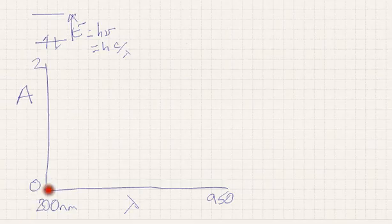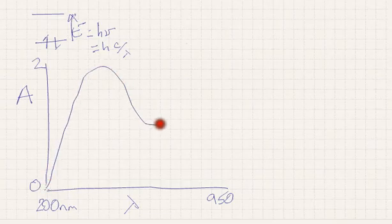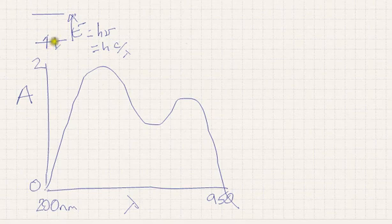Going back to our original diagram, the gap that is jumped is going to dictate where the absorption takes place and the lambda there. One ends up on the graph with peaks reflecting such transitions, electronic transitions taking place in this spectrum.